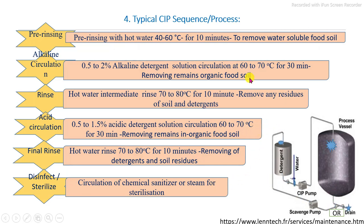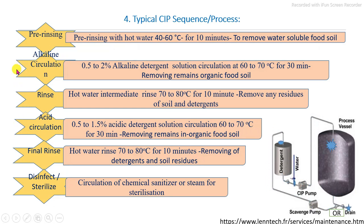In this typical CIP sequence, all processing equipment follows this sequence, which is carried out depending on the specific application. For example, in some processing industries acid circulation is carried out between the intermediate rinse and the disinfection stage as per requirement. However, pre-rinsing, alkaline cleaning, and final rinsing are the main basic steps of the CIP sequence. You can see in this picture how detergents and water are circulated through the processing vessel for cleaning.